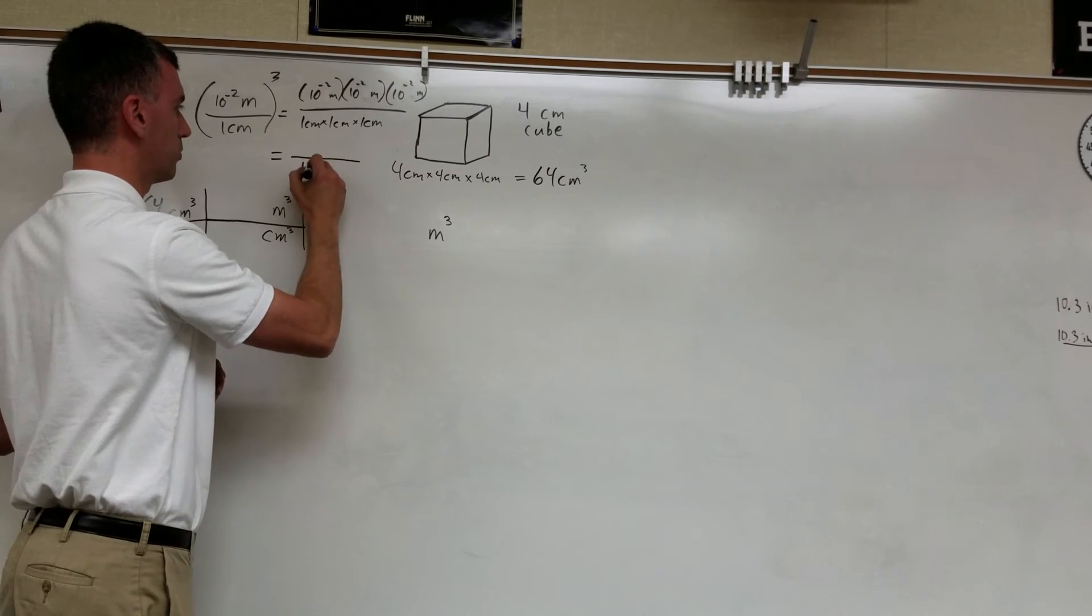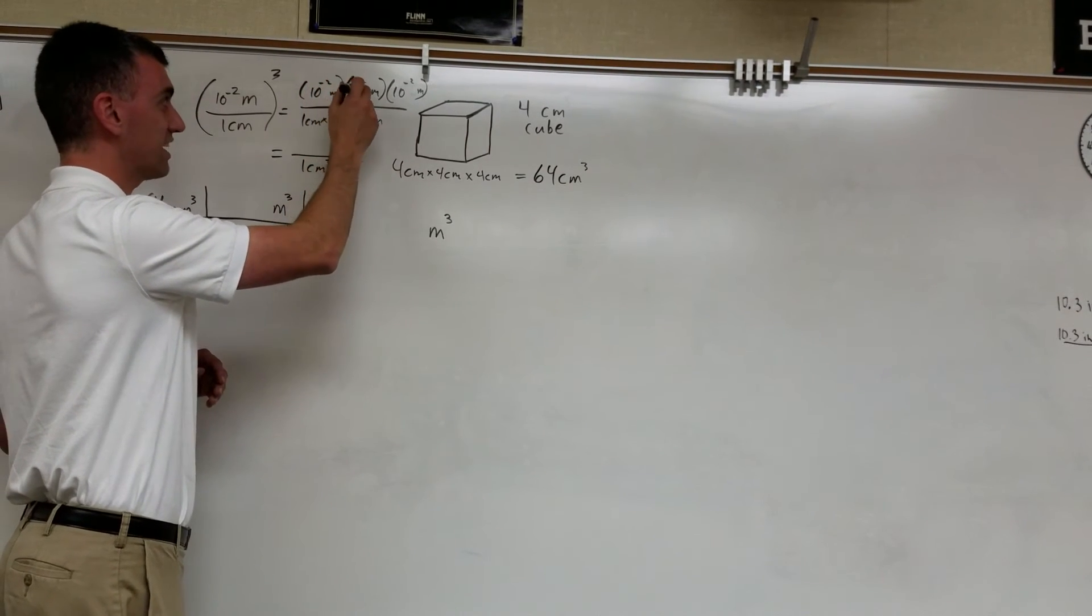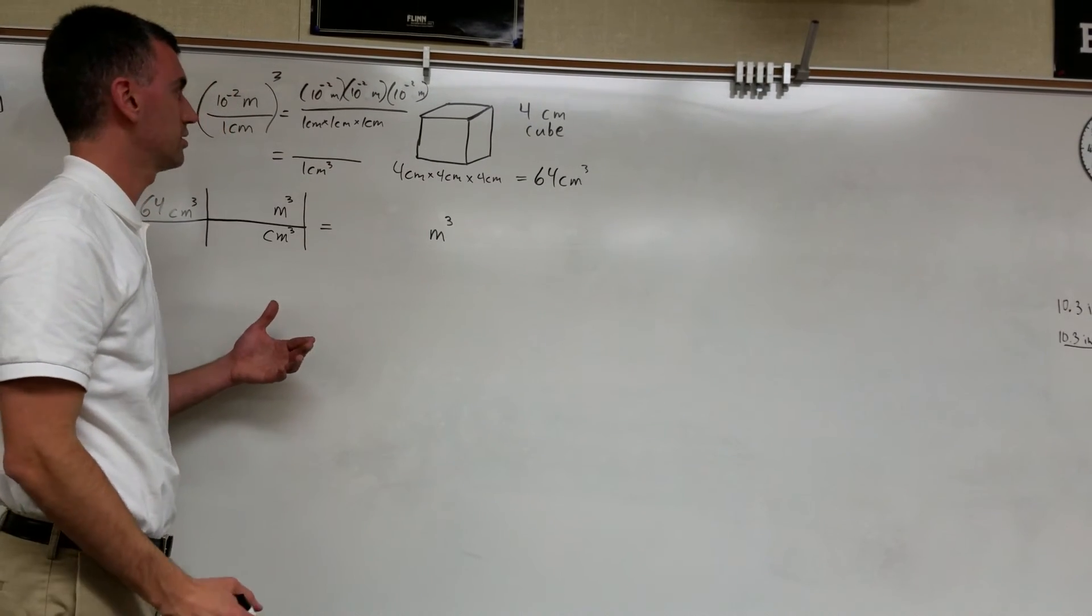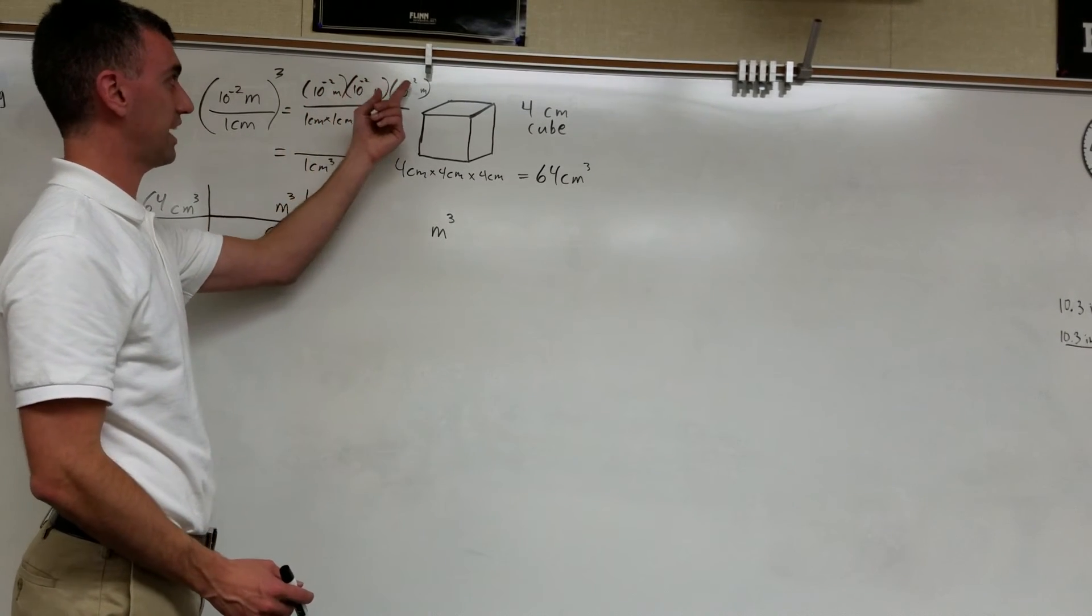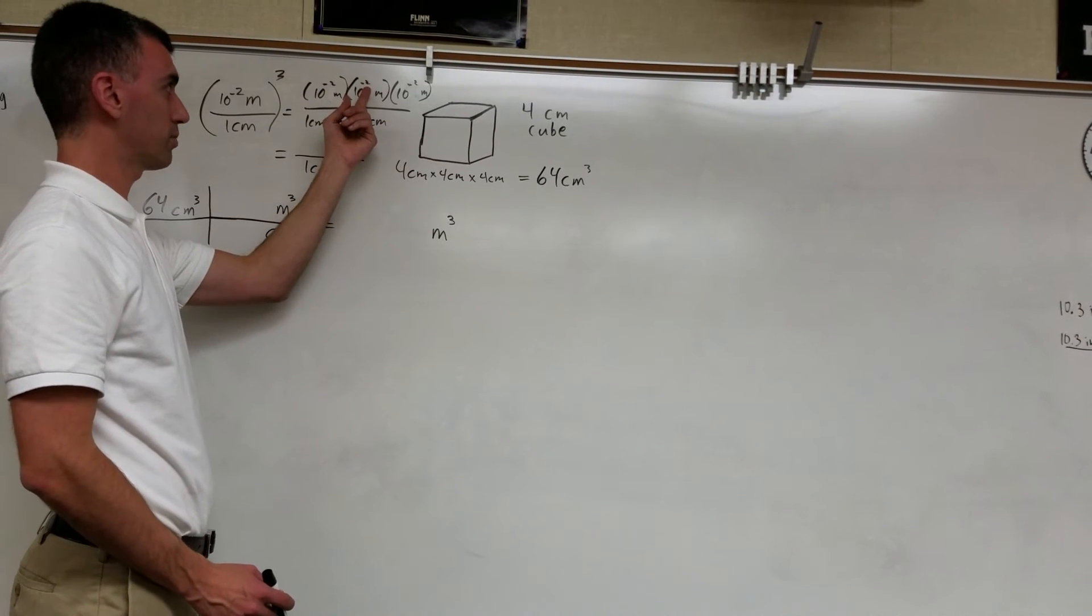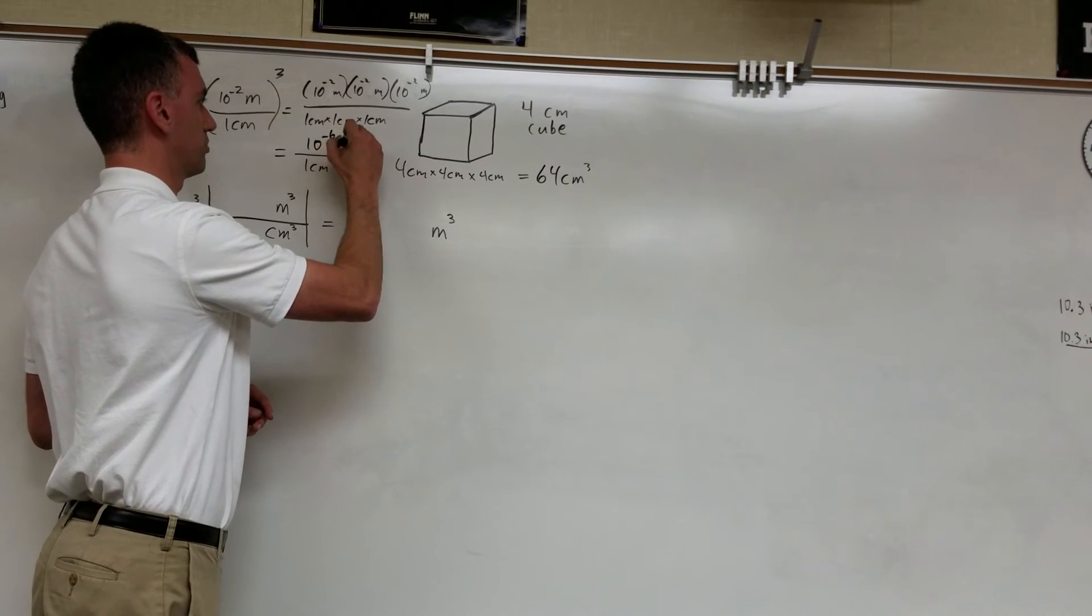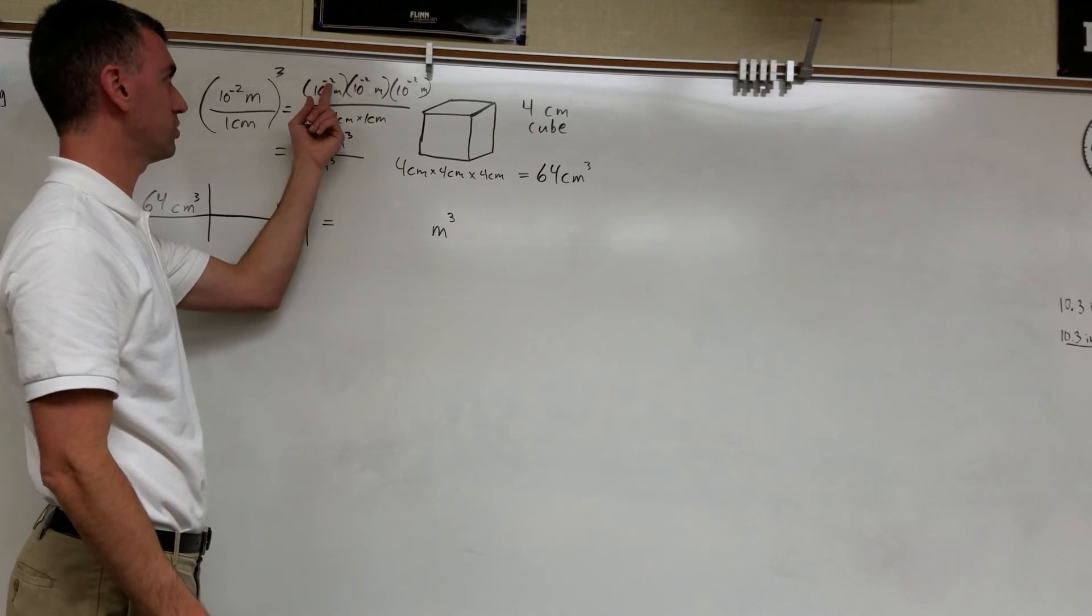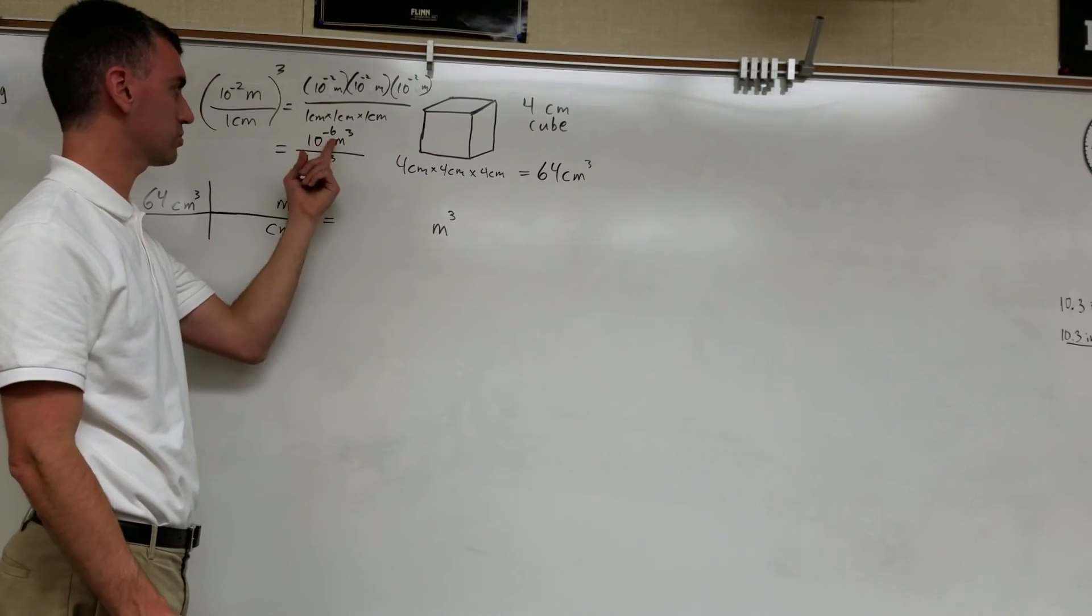So this would come out to, on the bottom, 1 cubic centimeter. And on top, 10 to the negative second times 10 to the negative second times 10 to the negative second. This is something you don't need a calculator for. When you multiply exponents, you just add them together. So negative 2 plus negative 2 makes negative 4, plus negative 2 makes negative 6. So, 10 to the negative 6 meters cubed.